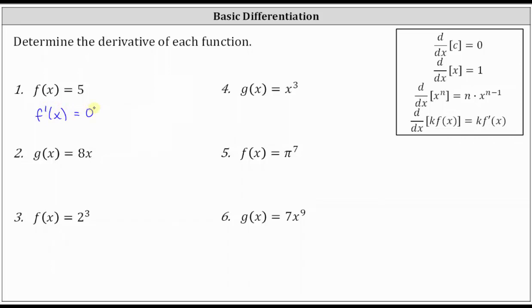Number two, we have g of x equals eight x. g prime of x is equal to eight times the derivative of x with respect to x, which is equal to one, which gives us g prime of x equals eight.